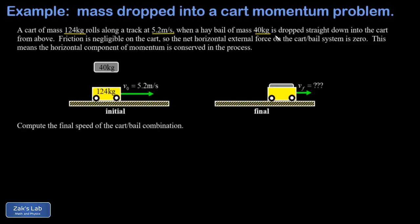When that hay bale contacts the cart, the cart exerts a rightward force on it to accelerate it to some common final velocity. The hay bale exerts a reaction force to the left which slows the cart down until the two objects reach this common final velocity. We're going to find that common final velocity vf by just using momentum conservation.